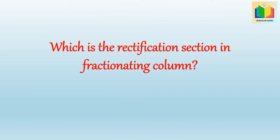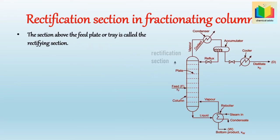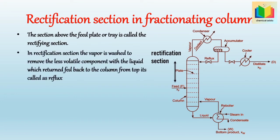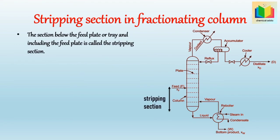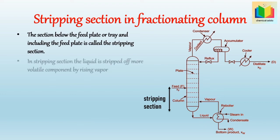Next question: which is the rectification section in a fractionating column? The section above the feed plate or tray is called the rectifying section. In the rectification section, the vapor is washed to remove the less volatile component with the liquid, which is fed back to the column from the top — it's called reflux. Which is the stripping section? The section below the feed plate or tray, including the feed plate, is called the stripping section. In the stripping section, the liquid is stripped off the more volatile component by rising vapor.